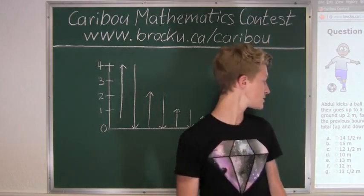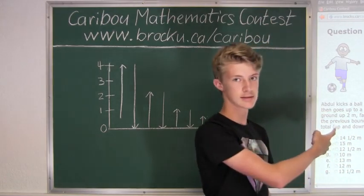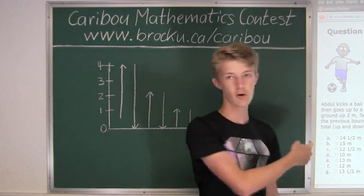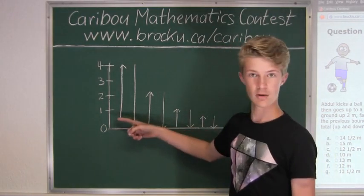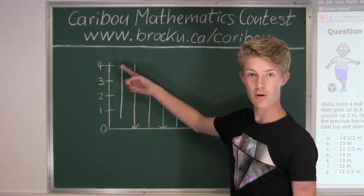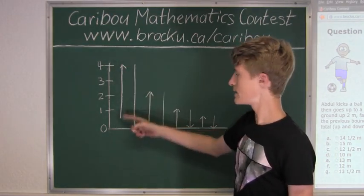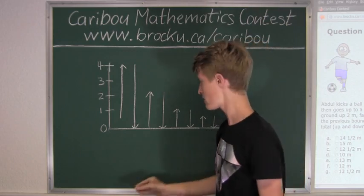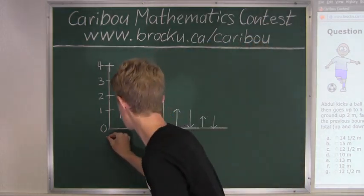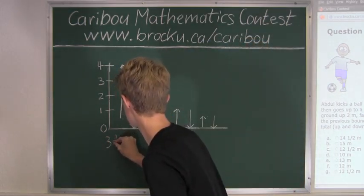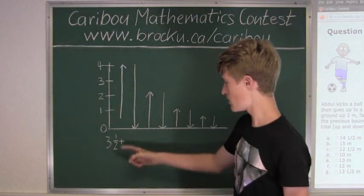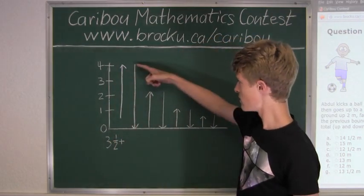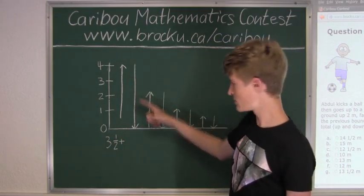Okay, and the question asks what distance the ball has moved in total up and down. So we know it goes from half a meter to 4, and 4 minus a half is 3 and a half. So therefore we have 3 and a half plus 4, because it's from 4 to 0.